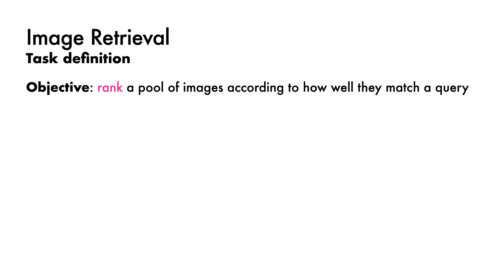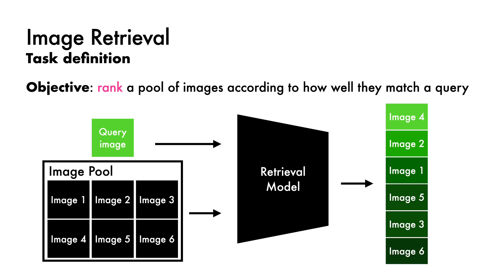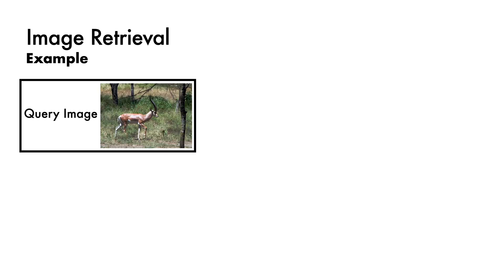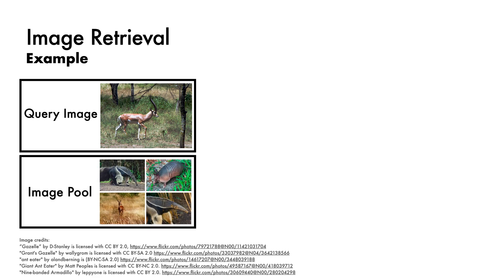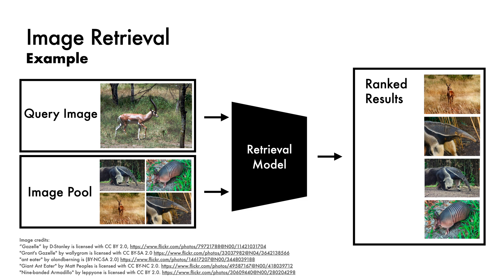Our second task is image retrieval. Here, our objective is to rank a pool of images according to how well they match a query. The inputs to the model are a query image and a pool of images to search through. These are fed into a retrieval model which produces a ranking among the image pool according to how similar each image is to the query. For example, suppose our query image is a beautiful gazelle and we want to find other gazelles amongst a pool of images. The retrieval model ranks the image containing a gazelle above those containing anteaters or a colourful armadillo. Modern algorithms can search through billions of images in a fraction of a second.